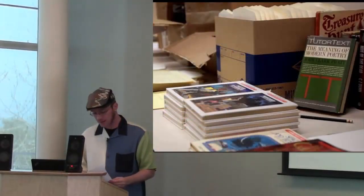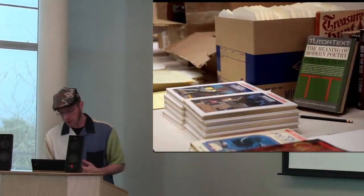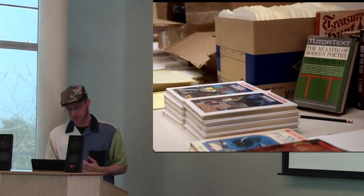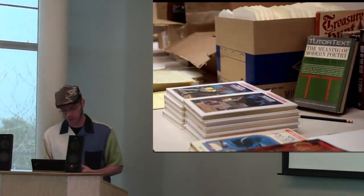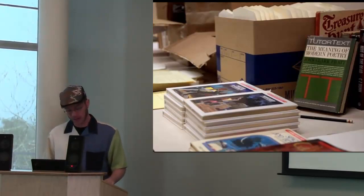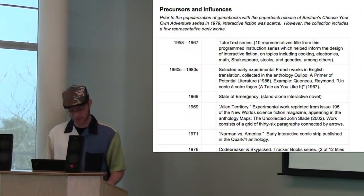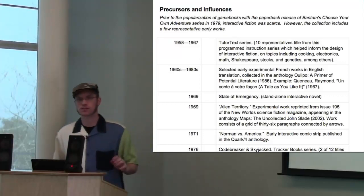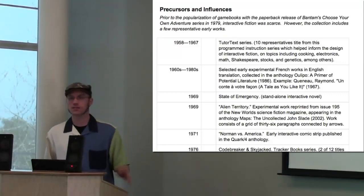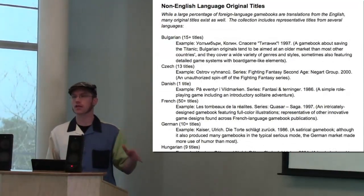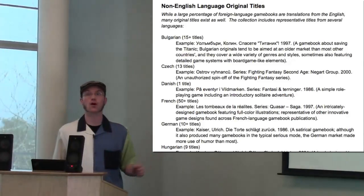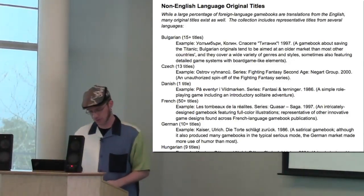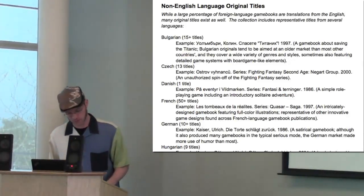In fact, UC Santa Barbara has one of the largest collections in the world of such material, since the UCSB Library Special Collections recently acquired the Demian Cats collection last year. It's a pretty impressively historically deep and materially and linguistically broad collection of such material, with thousands of volumes.